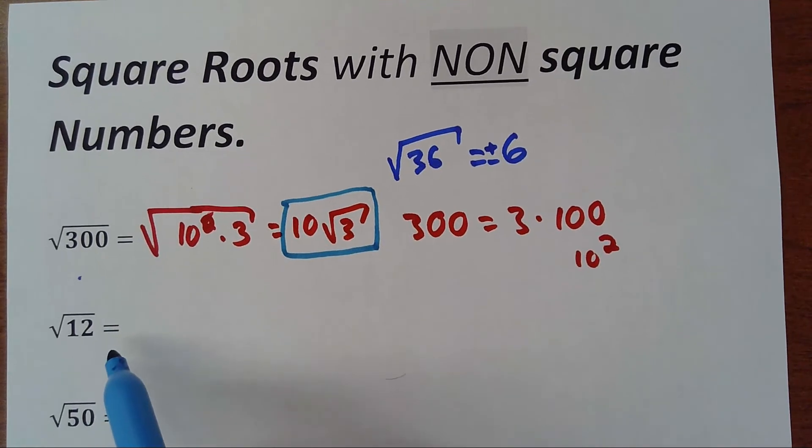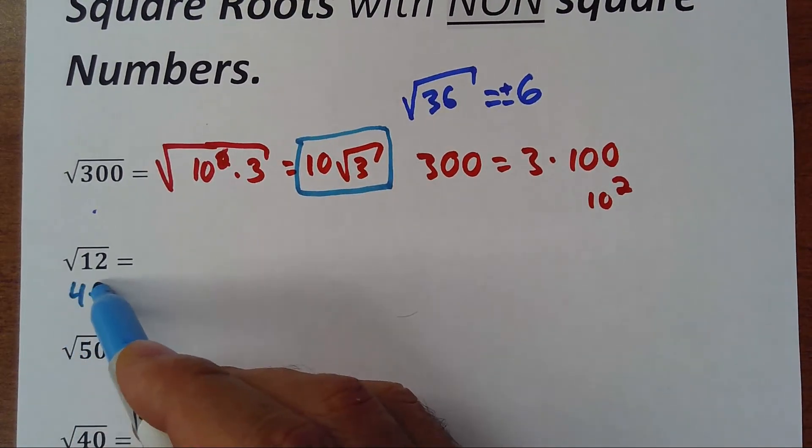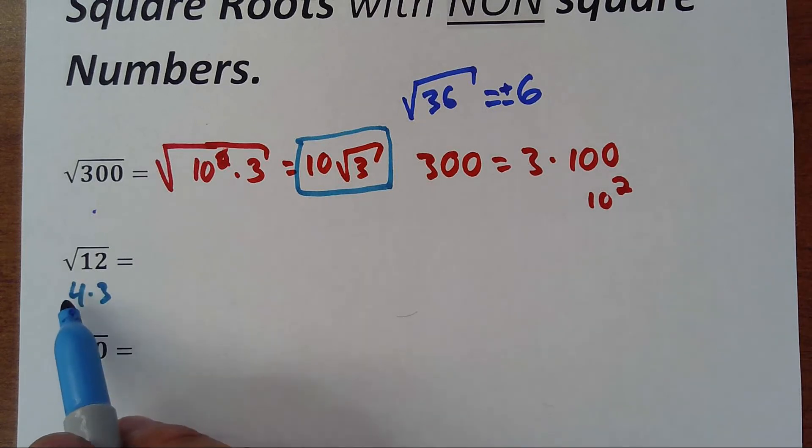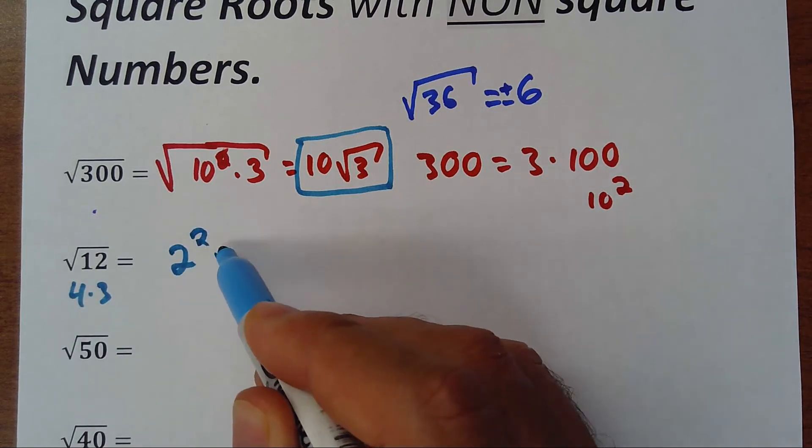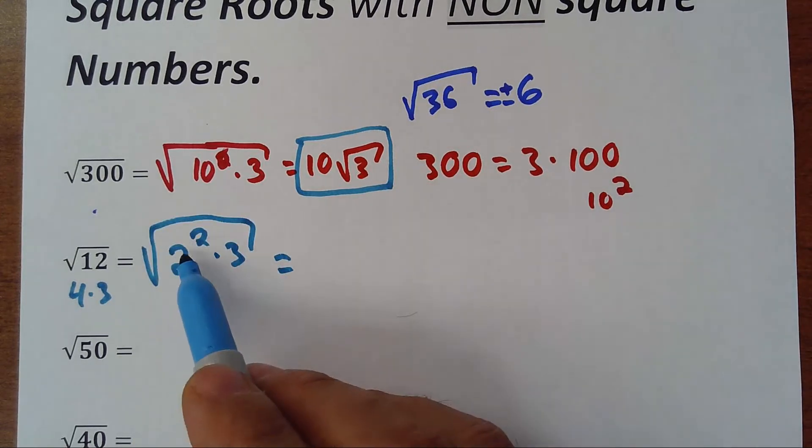Then we have 12. 12 is 4 times 3, and the 4 is 2 squared. So we write 2 squared times 3 inside of the root, and that would be the same as 2 goes out, 2 square root of 3.